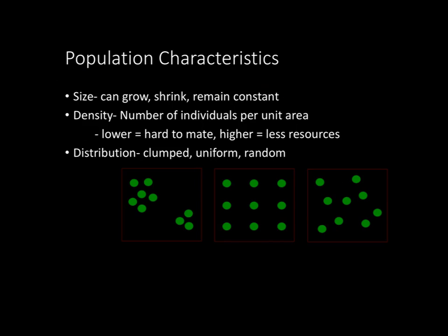Population characteristics — there are three main things to look at. Population size can grow, shrink, or remain constant. Population density refers to the number of individuals living per unit area: low population density means extra resources per organism but harder to find mates, while high population density means a plethora of mates but depletion of resources. Population distribution, shown in the diagram, includes clump distribution (organisms in different clumps), uniform distribution (everyone evenly spaced), and random distribution (everyone randomly spread), each with its own pros and cons.